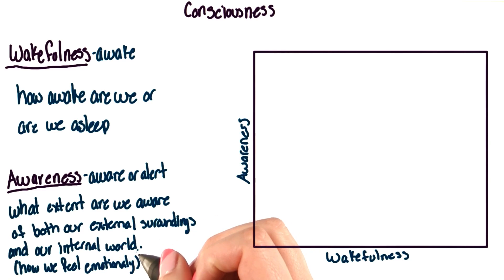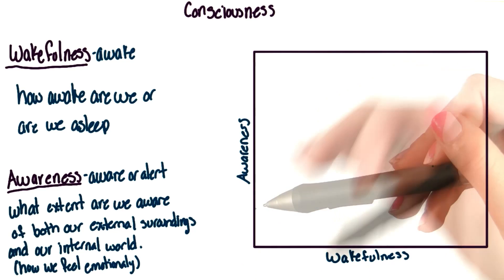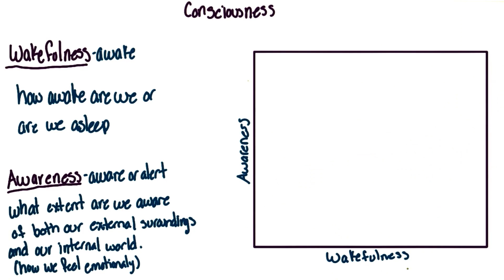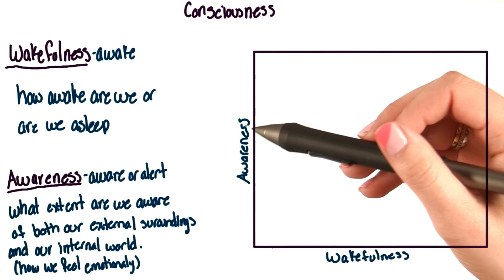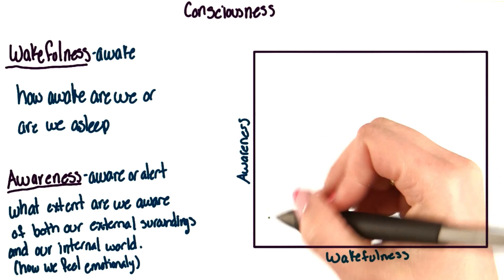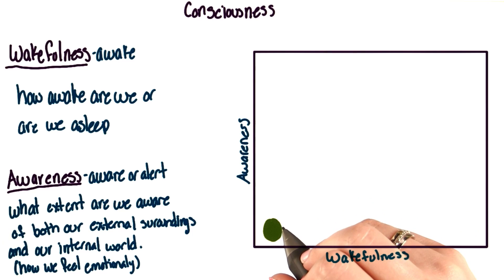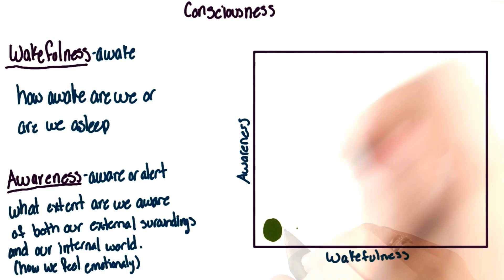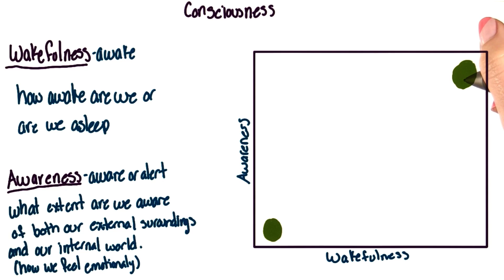This is also being aware of our cognitions — so what it is that we're thinking. Let's look at this on a diagram. We have awareness and wakefulness. We can have minimal consciousness, meaning we're not aware or awake, which would be here. This would be an example of a coma. Or we could be fully aware and awake, maybe up here. So this would be something like practicing the piano.